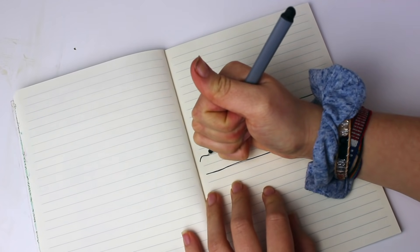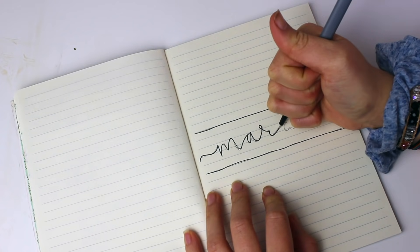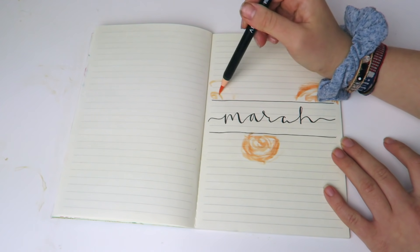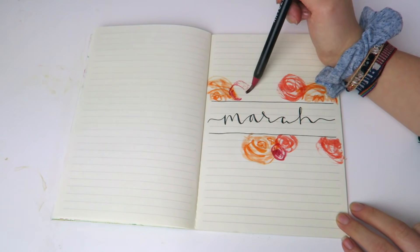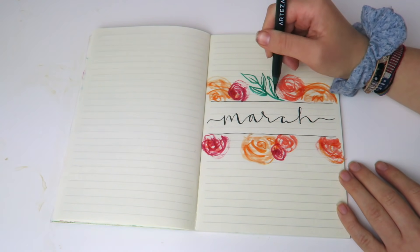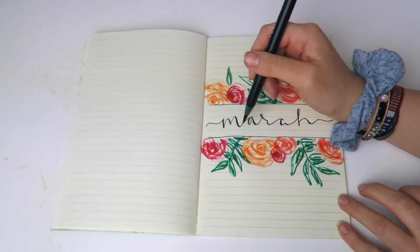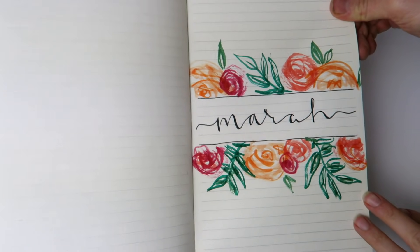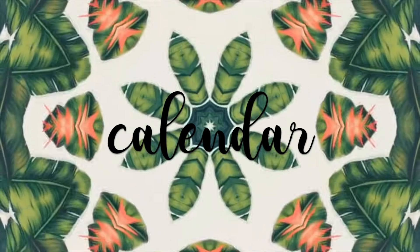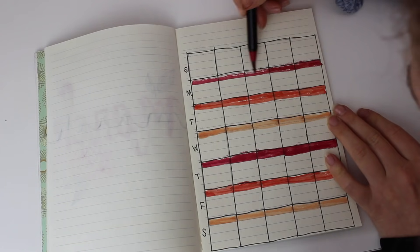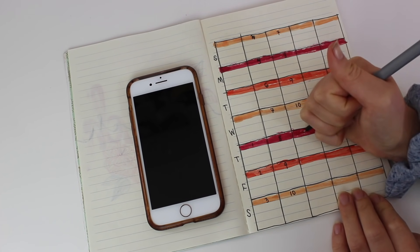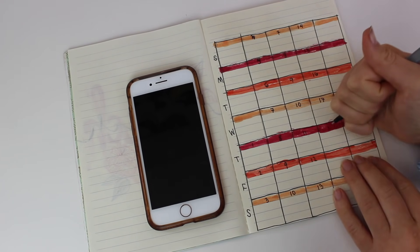So the first section in my bullet journal is just the month that I'm on. So I'm currently on March in my life. Then I wanted to quickly add a calendar, just a simple, easy one so that I could see my month at a glance.